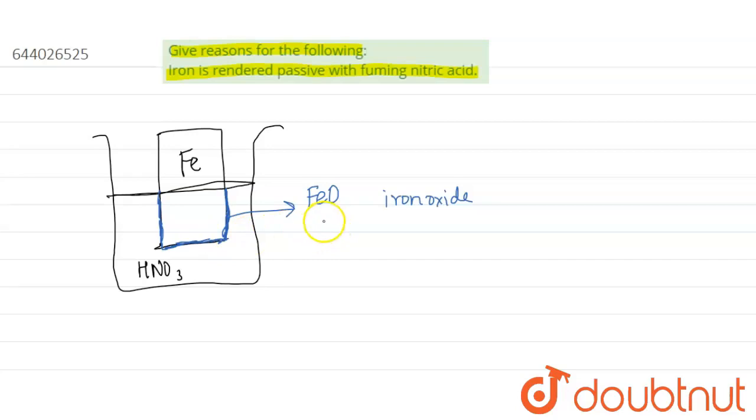So, because of this layer, this layer is non-reactive with nitric acid, HNO3. Because of its non-reactivity with nitric acid, the inner Fe will also not react with the HNO3.